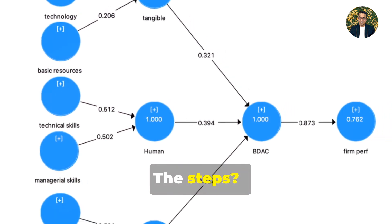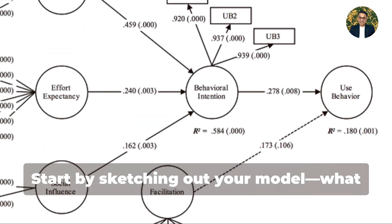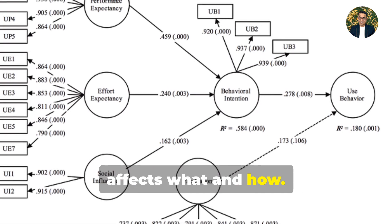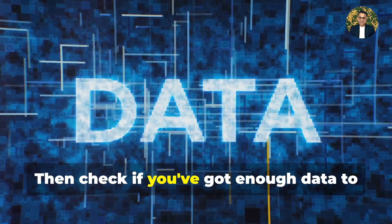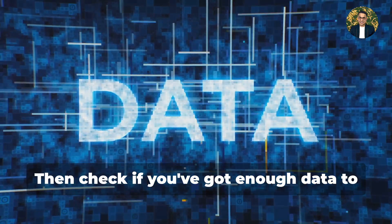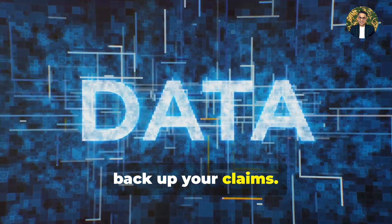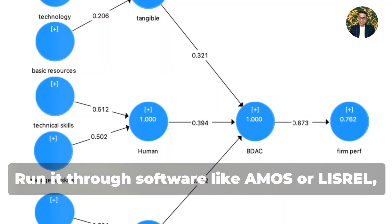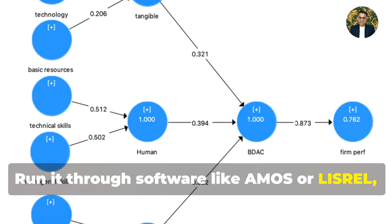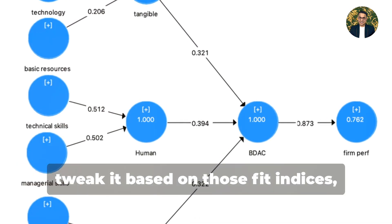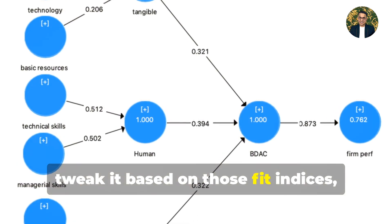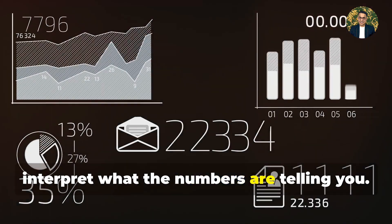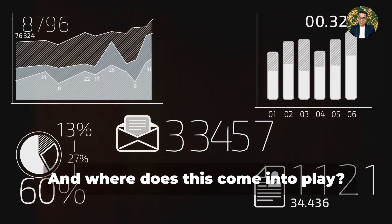The steps? Start by sketching out your model — what affects what and how. Then check if you've got enough data to back up your claims. Run it through software like Amos or LISREL, tweak it based on those fit indices, and voilà — interpret what the numbers are telling you.